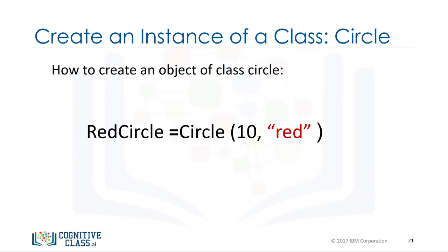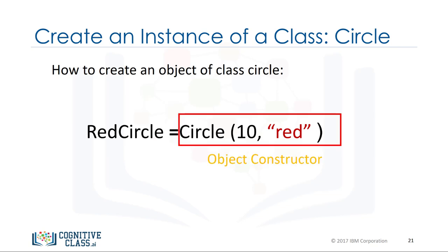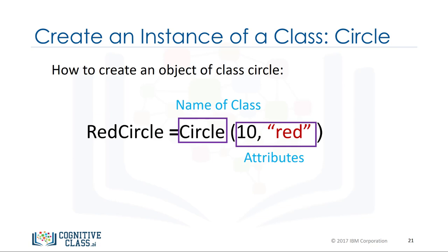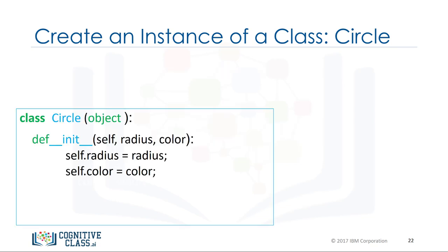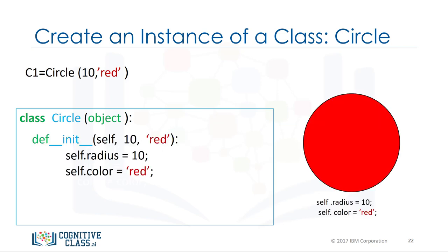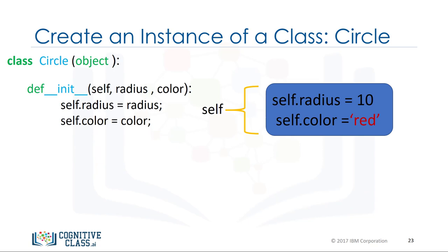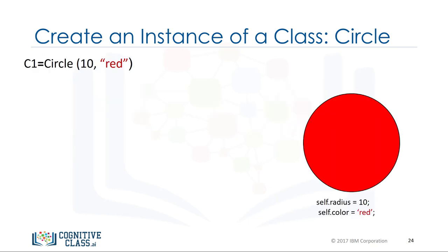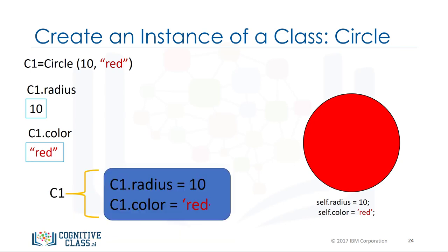After we have created the class, in order to create an object of class circle we introduce a variable — this will be the name of the object. We create the object using the object constructor, which consists of the name of the class as well as the parameters. When we create a circle object we call the code like a function. Typing the object's name followed by a dot and the data attribute name gives us the attribute value — for example, the radius is 10. We can do the same for color, and we can see the relationship between the self parameter and the object.